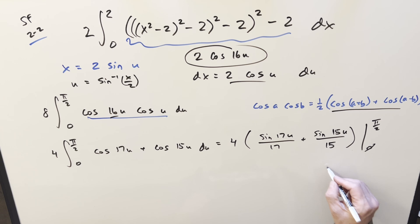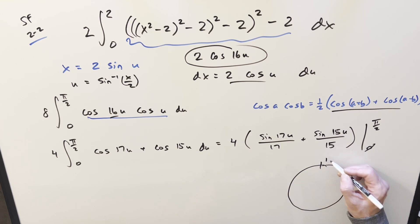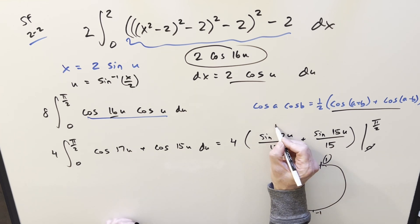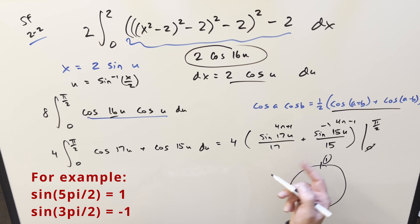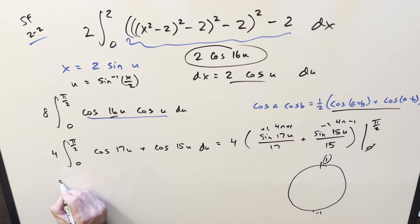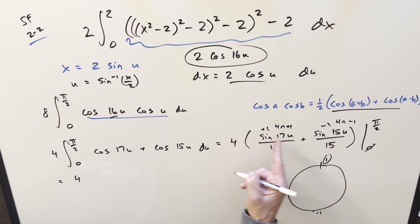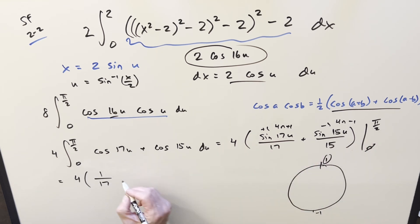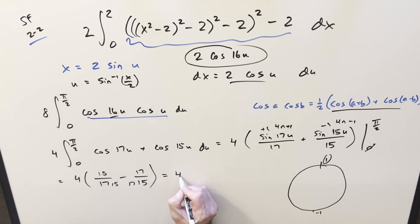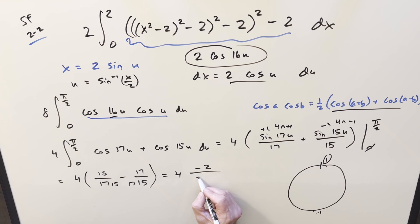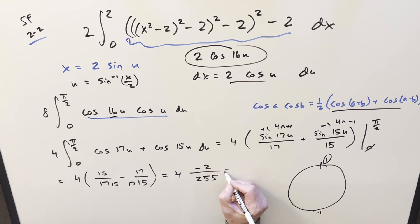At pi over 2, sine of pi over 2 is 1. Now 17 is of the form 4n plus 1 and 15 is of the form 4n minus 1, so the sine 17 term gives minus 1 and the sine 15 term gives plus 1. So we have 4 times one over 17 minus one over 15. Getting a common denominator: 15 minus 17 is minus 2, and 17 times 15 is 16 squared minus 1, which is 255. So the final answer is minus 8 over 255.